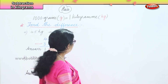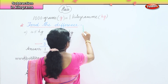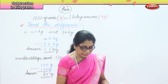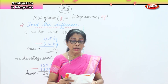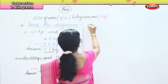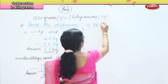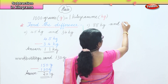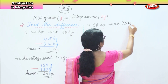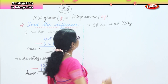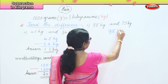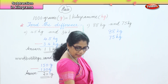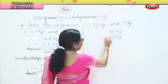Now let's do a couple more sums for practice. The third sum is 88 kilograms take away 75 kilograms. First we arrange: 88 kilogram, 75 kilogram. Then we find the difference — put the minus sign.